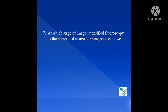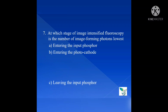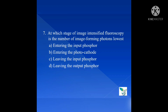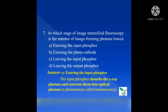Question number 7: At which stage of image intensified fluoroscopy is the number of image-forming photons lowest? Option A: Entering the input phosphor; Option B: Entering the photocathode; Option C: Leaving the input phosphor; Option D: Leaving the output phosphor. The answer is Option A, entering the input phosphor. The input phosphor converts x-ray photons into optical photons — that is, x-ray photons are converted into light photons — and that phenomenon is known as luminescence.